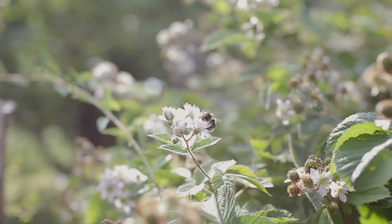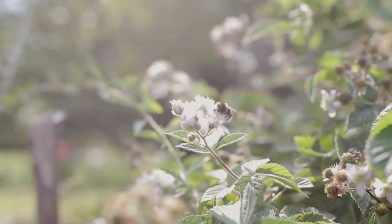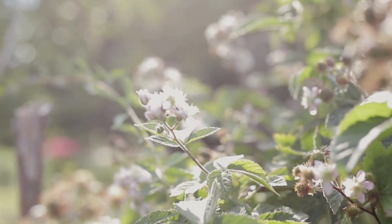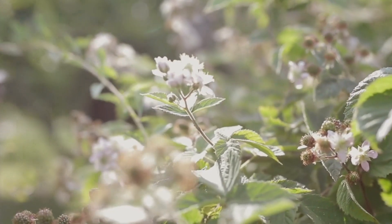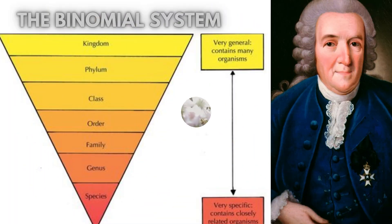He is most famous for creating a system of naming plants and animals, a system we still use today. This system is known as the binomial system, whereby each species of plant and animal is given a genus name followed by a specific name.